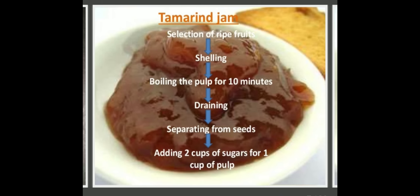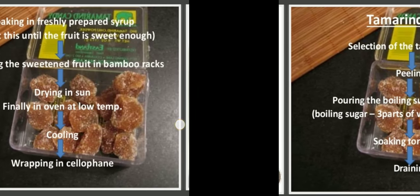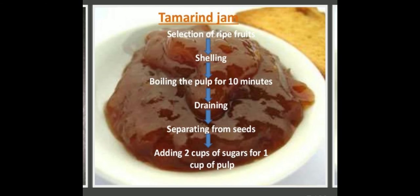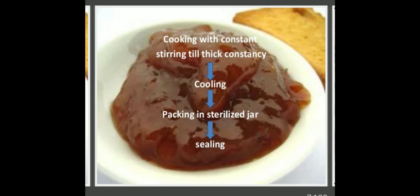For tamarind jam: select ripe fruits, shell them, boil the pulp for 10 minutes, drain, separate from seeds, add 2 cups of sugar per 1 cup of pulp, cook with constant stirring until thick consistency of 65–67°Brix is obtained. Then cool and pack in sterilized jars and seal.